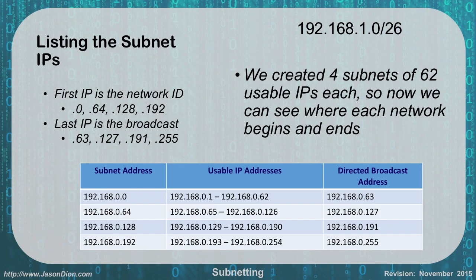When listing our subnets, we identify each by their network ID — the first IP in any range. For 192.168.0.0/26, our four subnets are: Network 192.168.0.0, usable IPs .1 through .62, broadcast .63. Next: network .64, usable .65 through .126, broadcast .127. Then: network .128, usable .129 through .190, broadcast .191. Finally: network .192, usable .193 through .254, broadcast .255. This shows how we carved the original 256 addresses into four networks of 64 each.